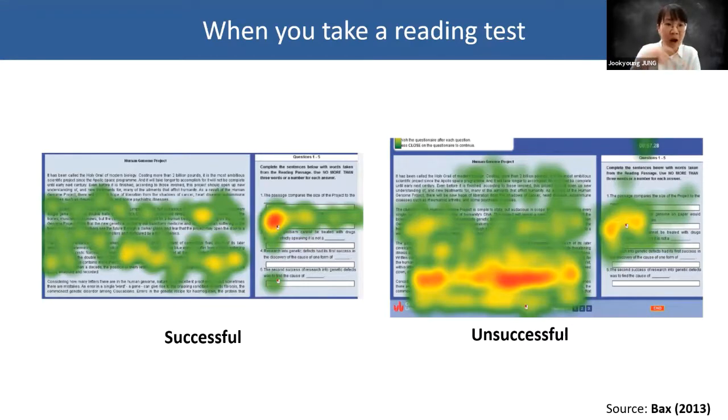Another interesting fact about this unsuccessful test taker is that he or she checked the time. Perhaps they were conscious about spending too much time on this item. So in sum, our eye movement during test taking is influenced by the type of reading comprehension item as well as our reading skill.